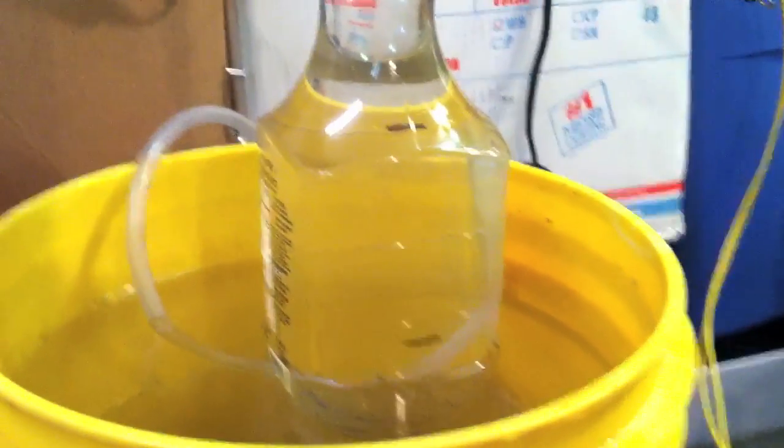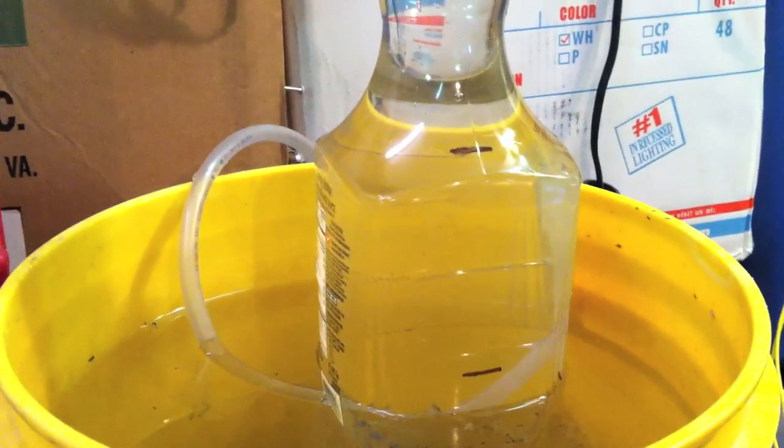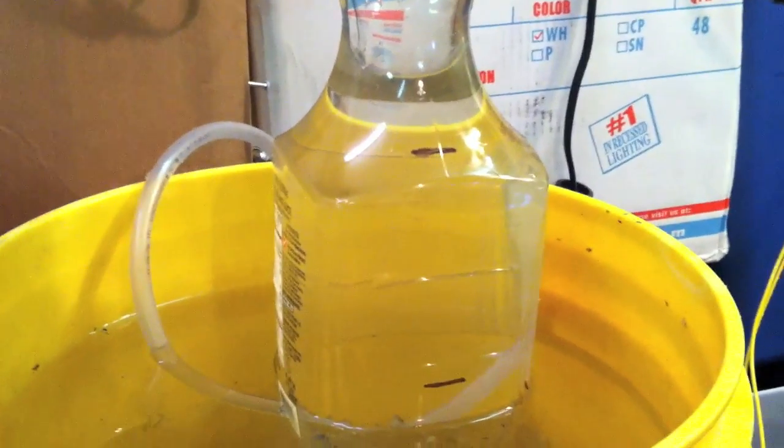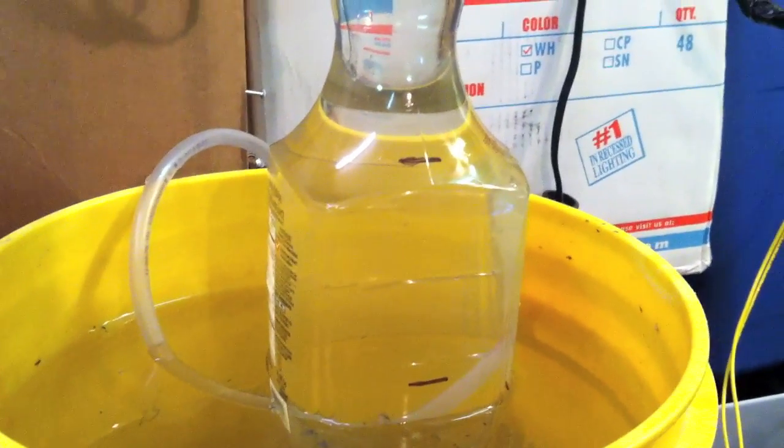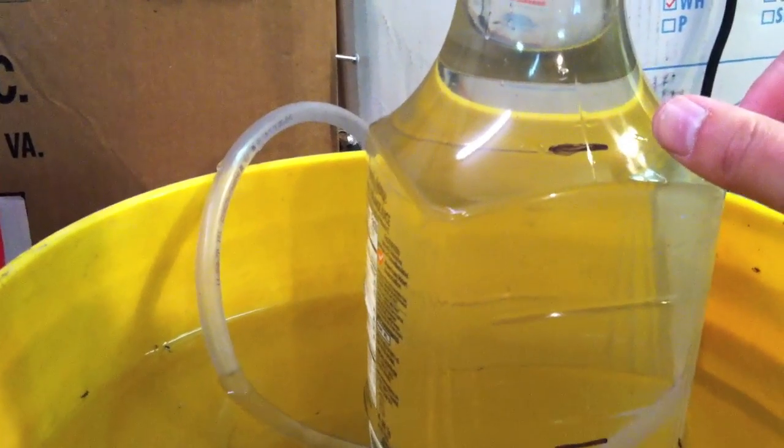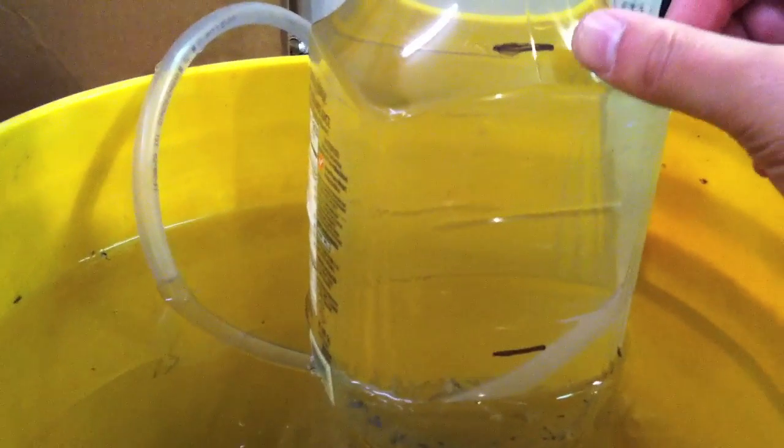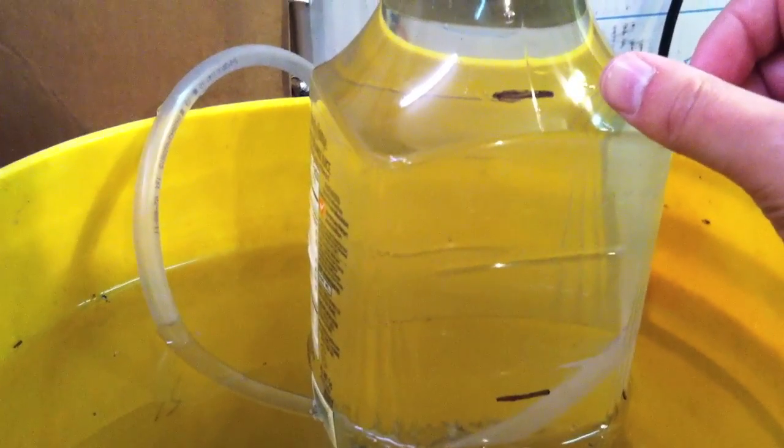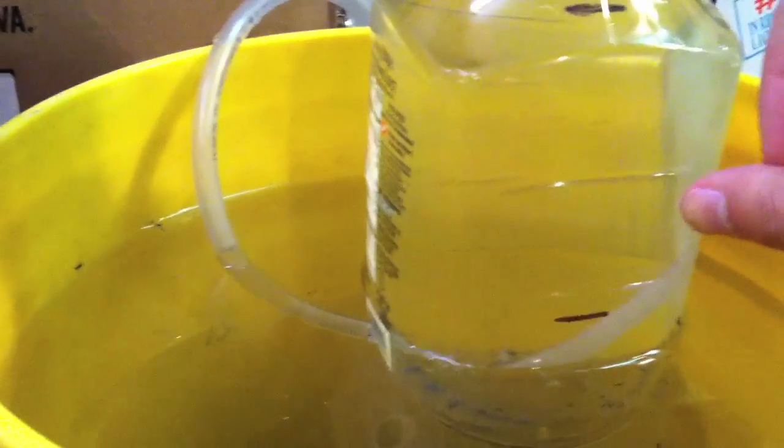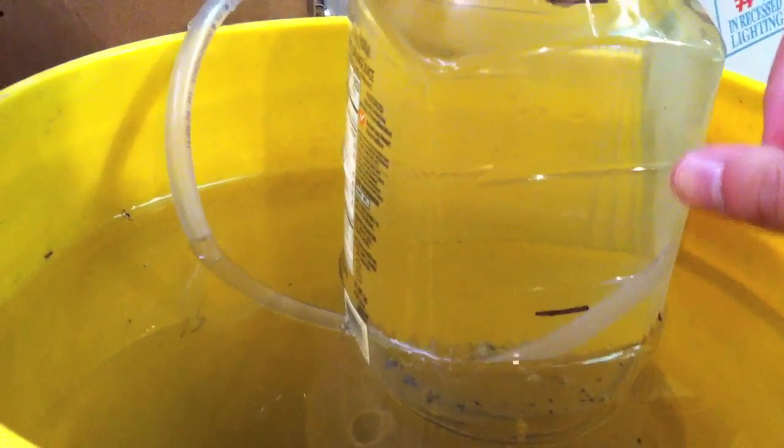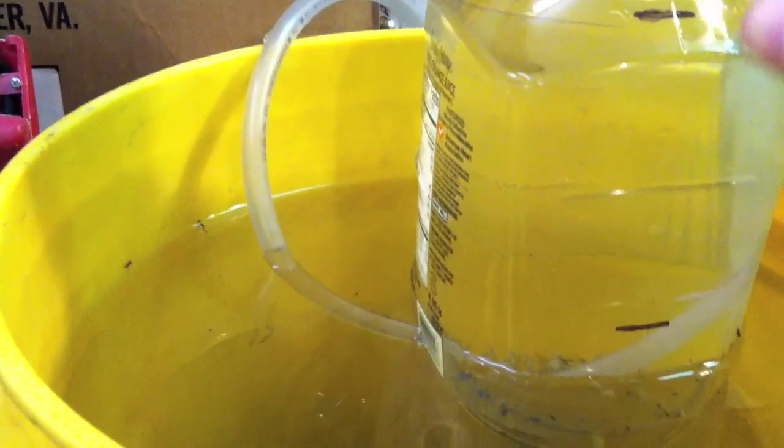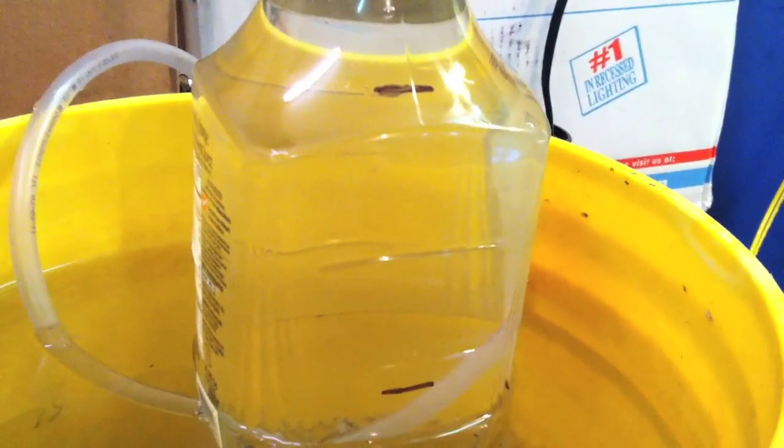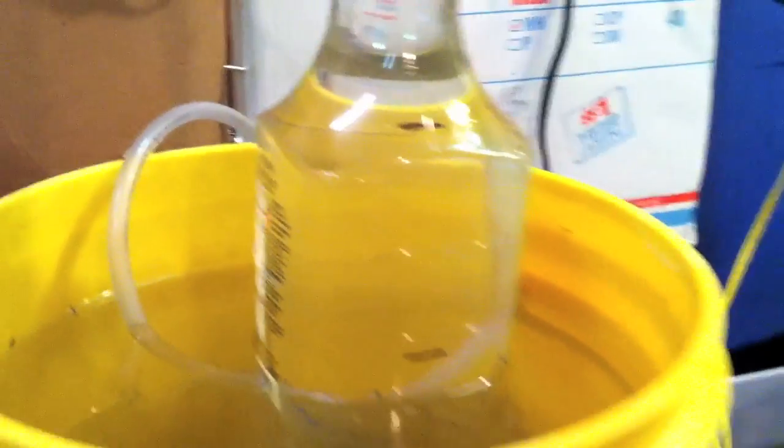So whenever I start pumping the hydrogen and whenever I connect the hose I will time it whenever it pushes the water out through the bottom. And whenever it hits this line I will start the timer and whenever it hits the next line I will stop the timer. That means that it would have filled between there and there with hydrogen which is 1 liter and then I will time how long it takes.